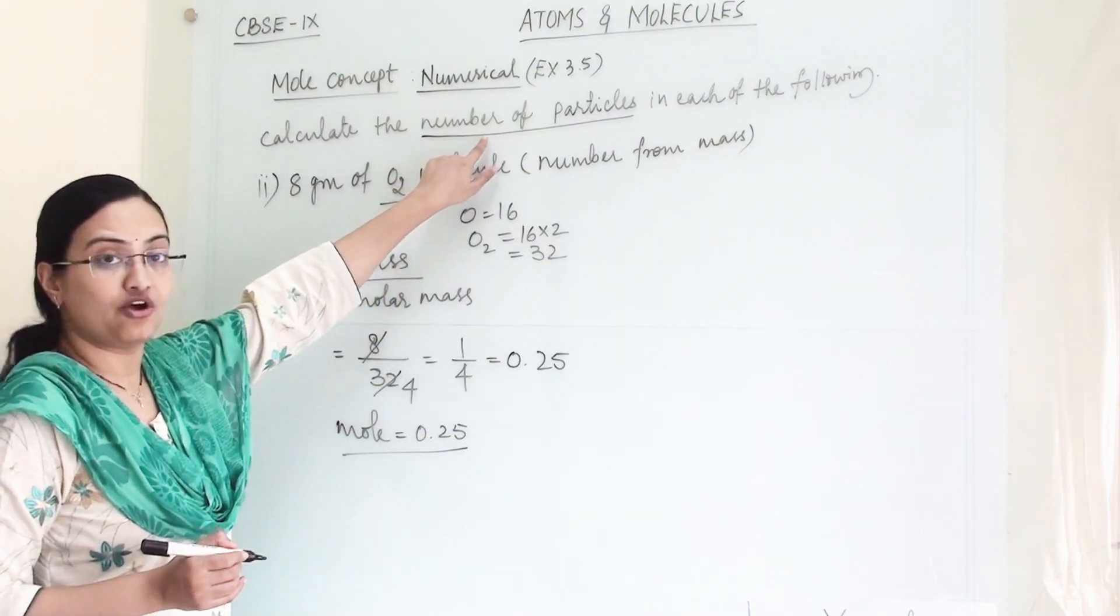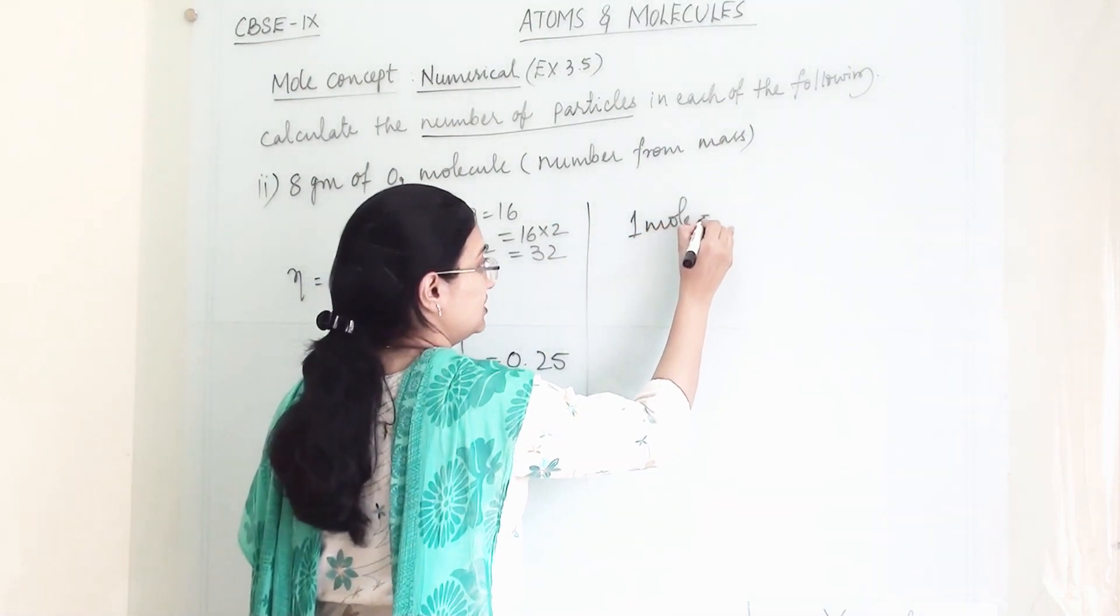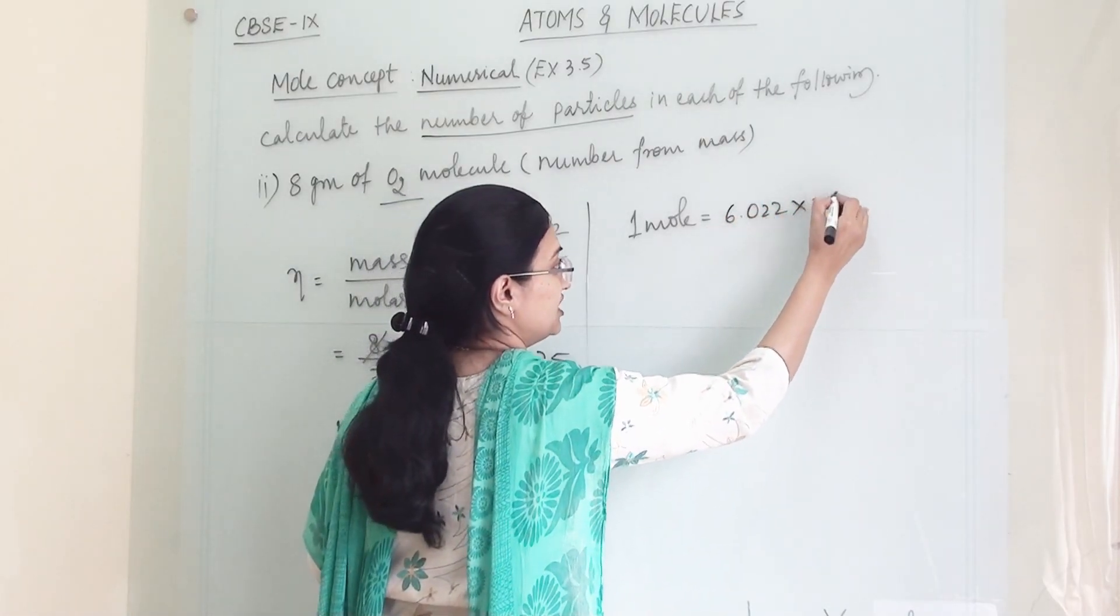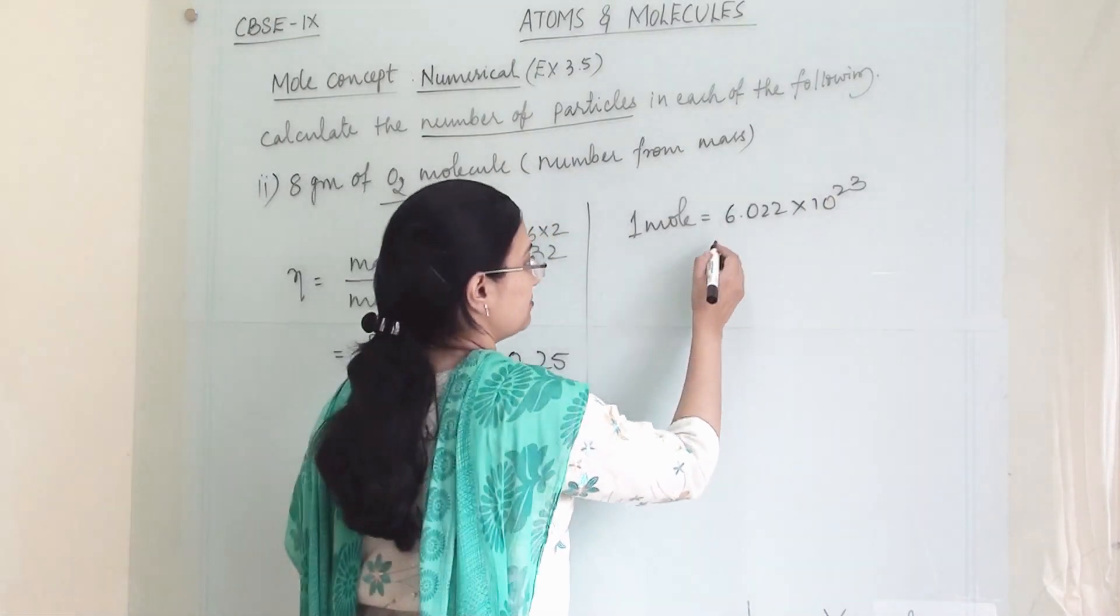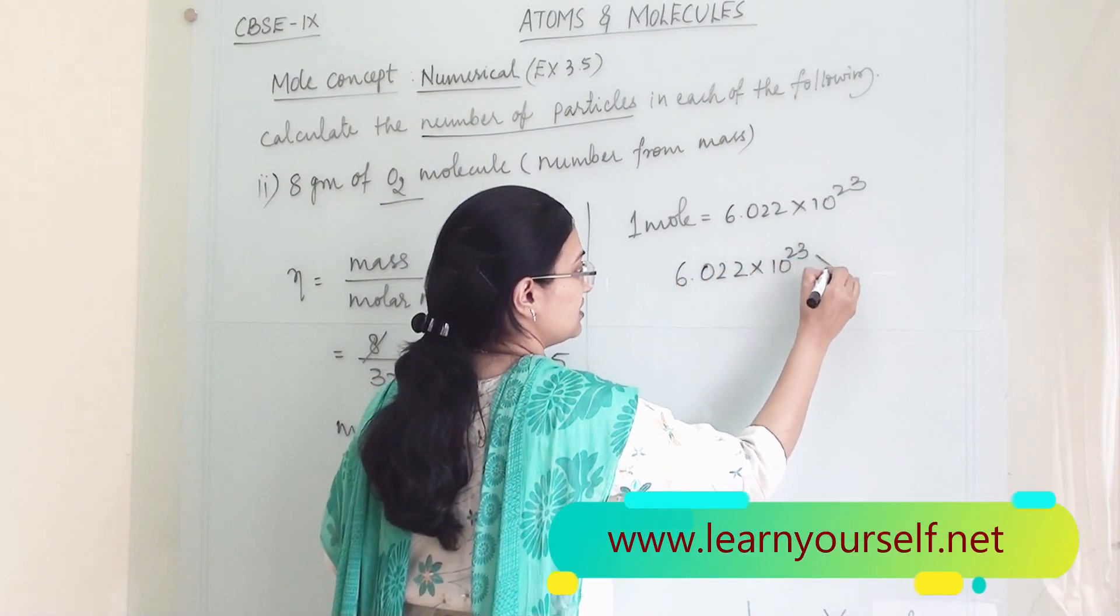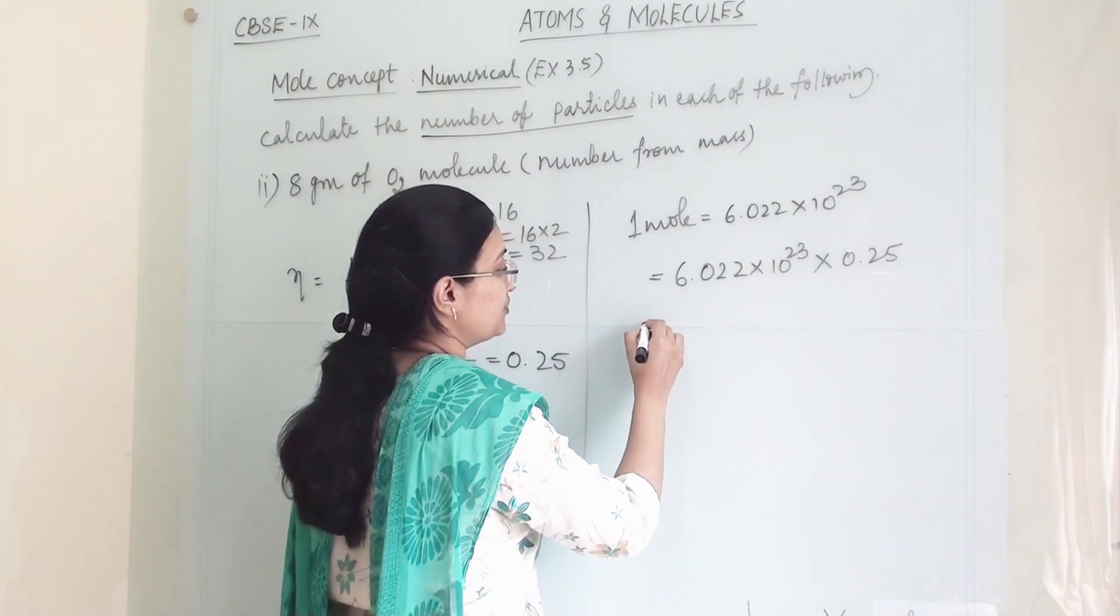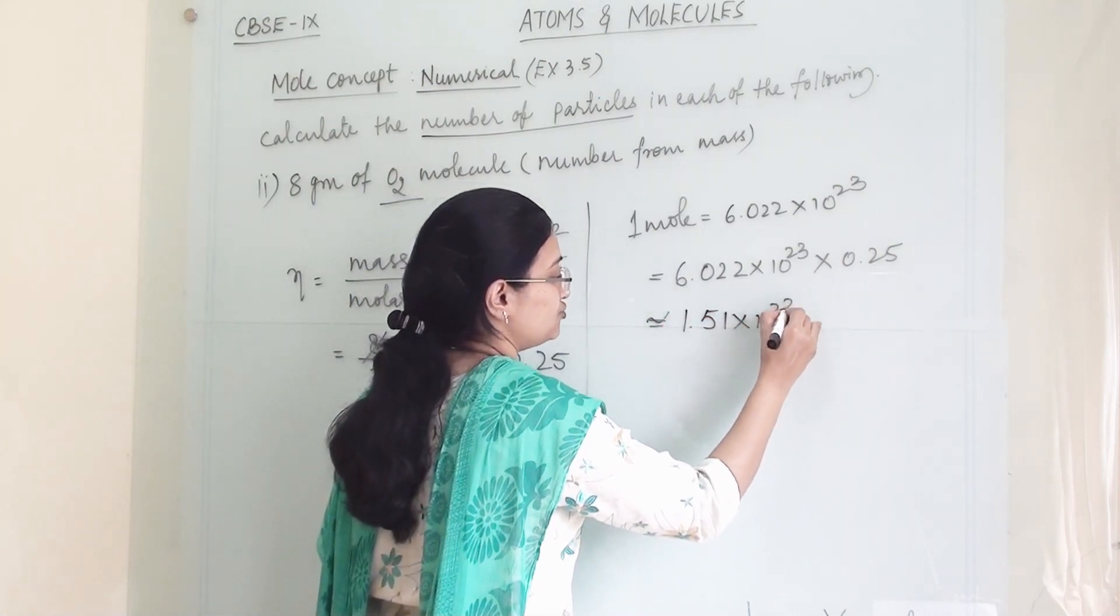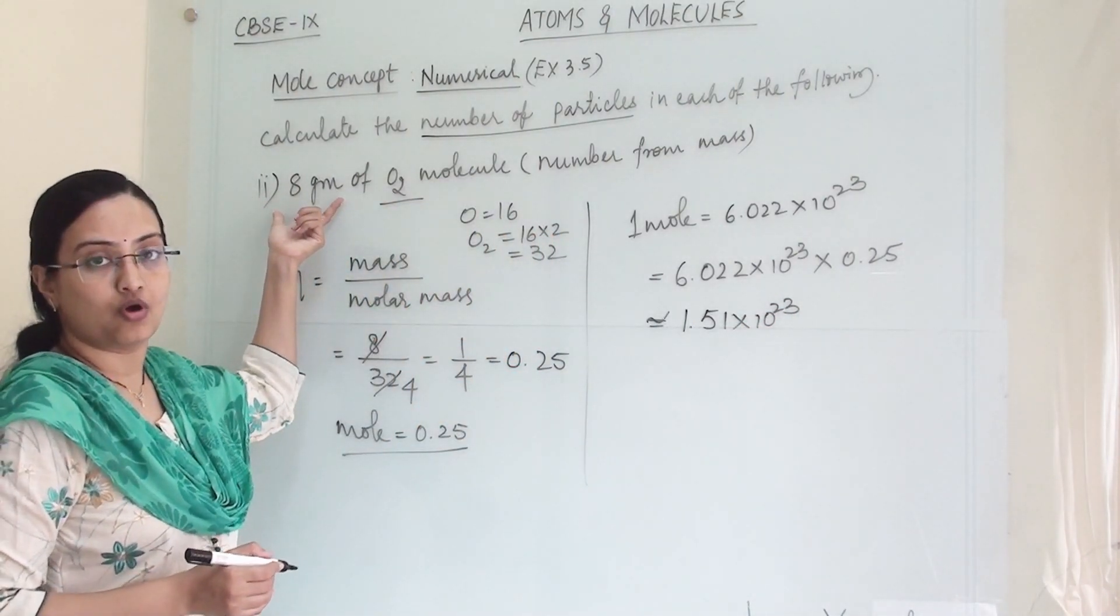Now we have to find the number of particles. In one mole, the number of molecules is 6.022 × 10^23. Now we multiply this with 0.25. So 6.022 × 10^23 multiplied by 0.25 will be approximately, when we round it off, 1.51 × 10^23 molecules present in 8 gram of oxygen.